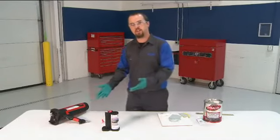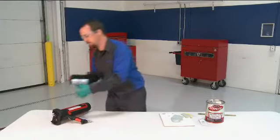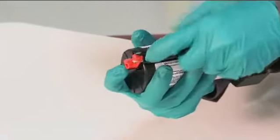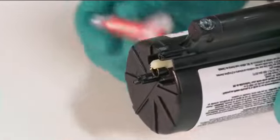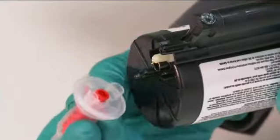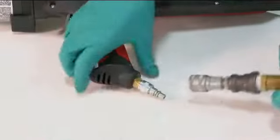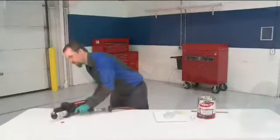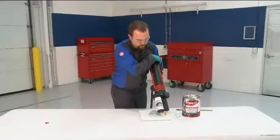Now let's take a look at this system which mixes the body filler and hardener as it's dispensed. To prepare the system, the cartridge and mixing nozzle are attached to the gun. An air supply is connected to the gun at the recommended air pressure. A small amount is first dispensed until uniform color is seen.